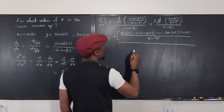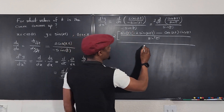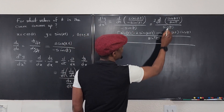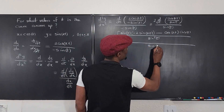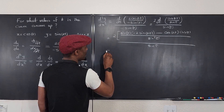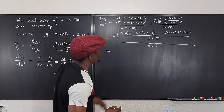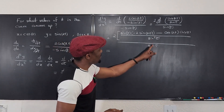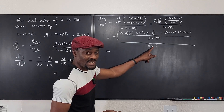Combining the sine t in the denominator with the sine squared t from the quotient rule gives us sine cubed t in the denominator. So we now have the simplified second derivative expression with sine cubed t on the bottom, and we need to find the critical numbers.